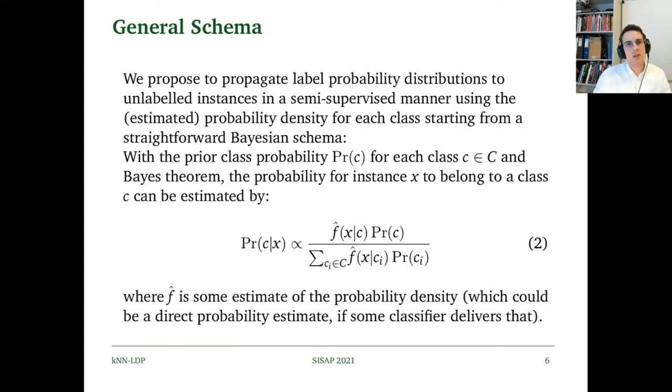We propose to propagate label probability distributions through this general schema which uses Bayes' theorem. The conditional probability of class C given point X is proportional to f hat of X given C multiplied by the prior probability of C, over the sum of the probability estimate multiplied by the corresponding prior for any of the classes in C, where f hat is some estimate of the probability density.